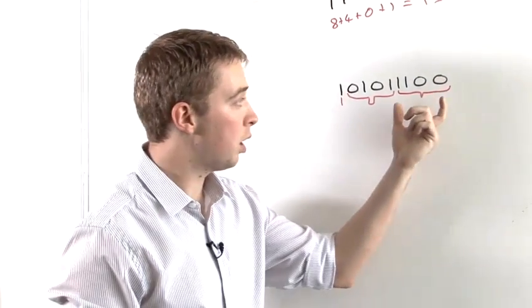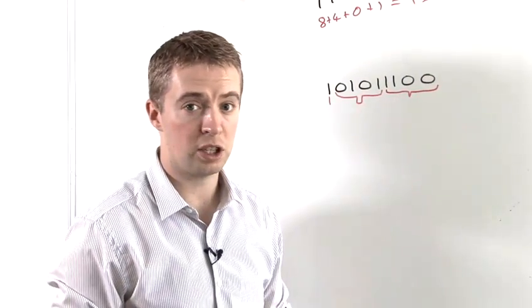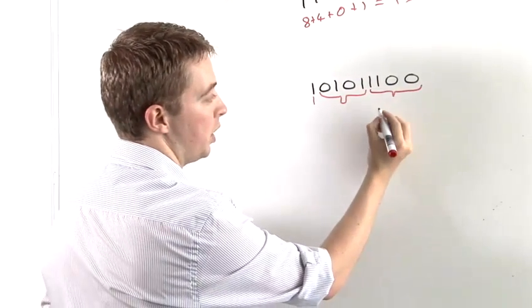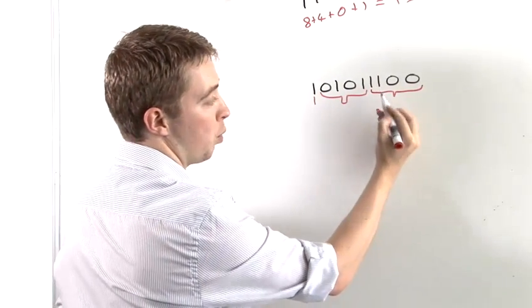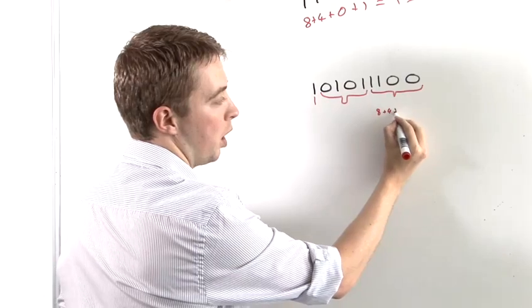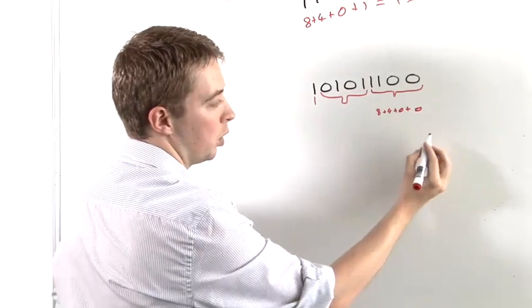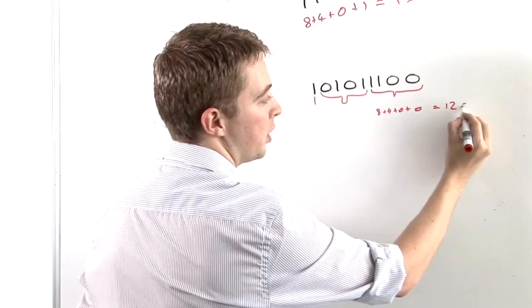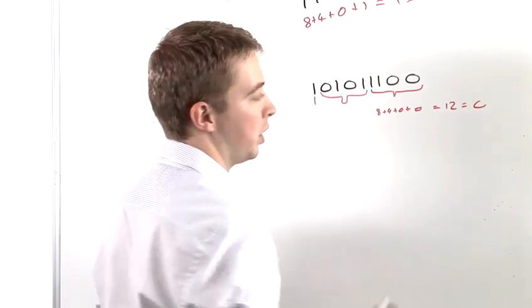So let's look at the first four digits of this binary number. We have 1 which represents 8 and another one which represents 4 and then 2 zeros, which is equal to 12 and in hexadecimal that's represented by C.